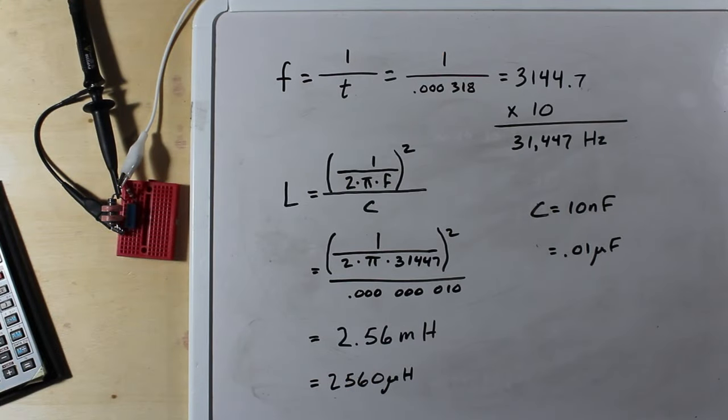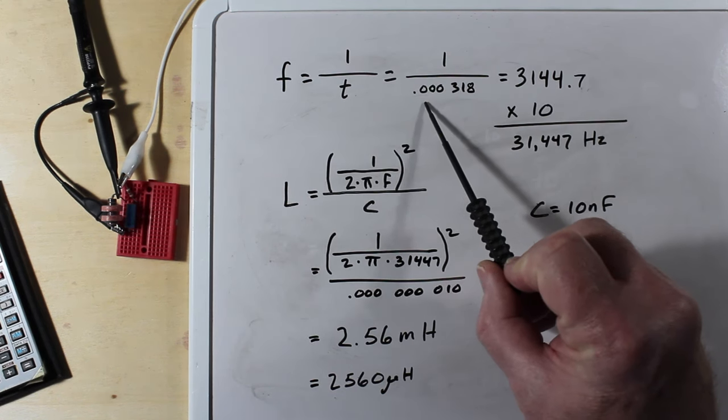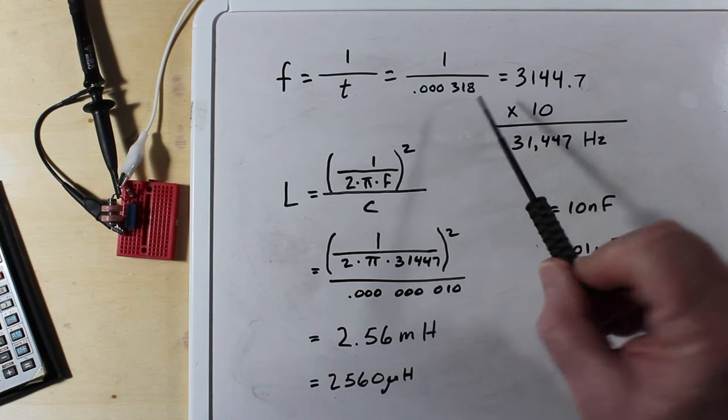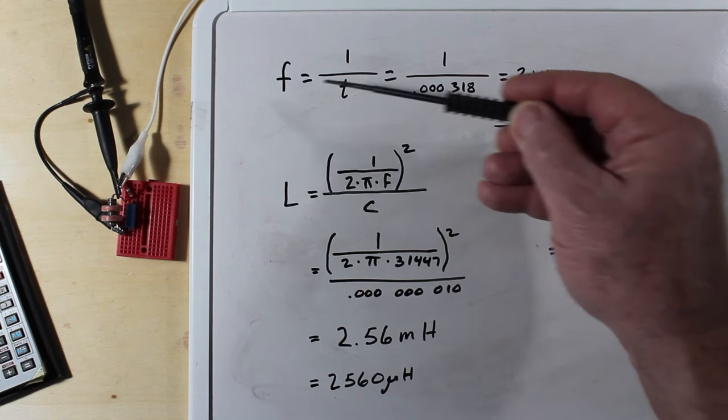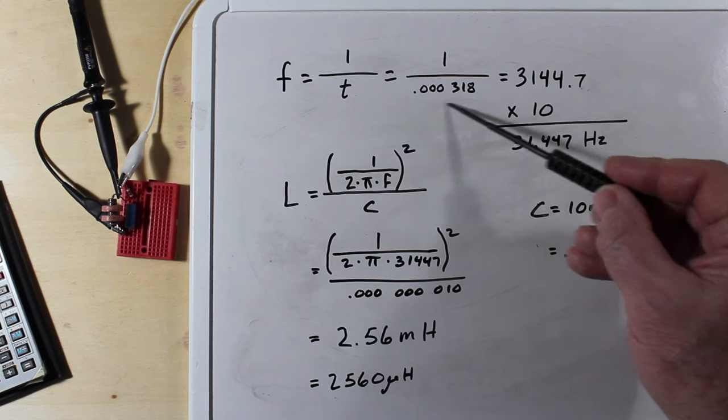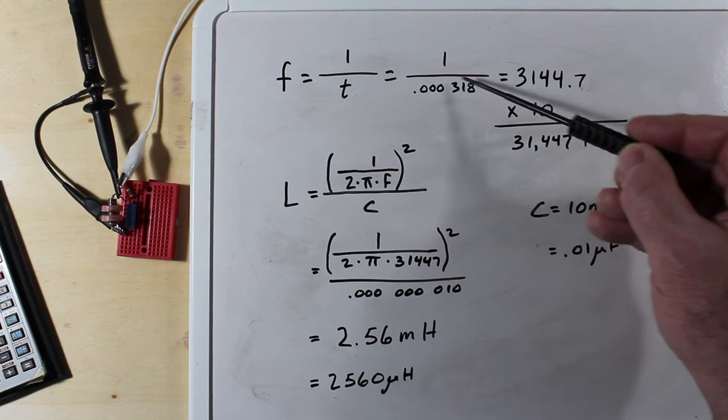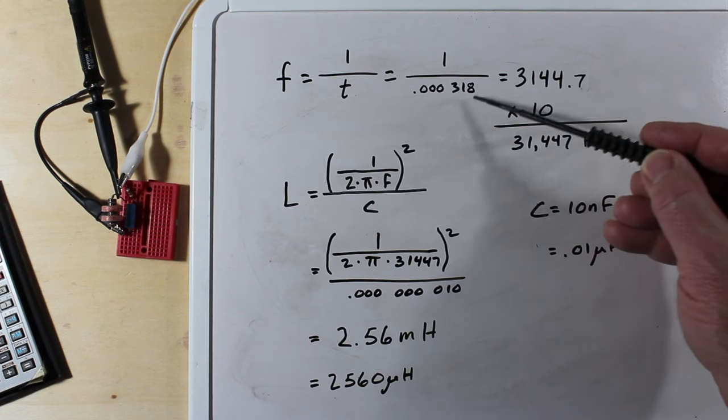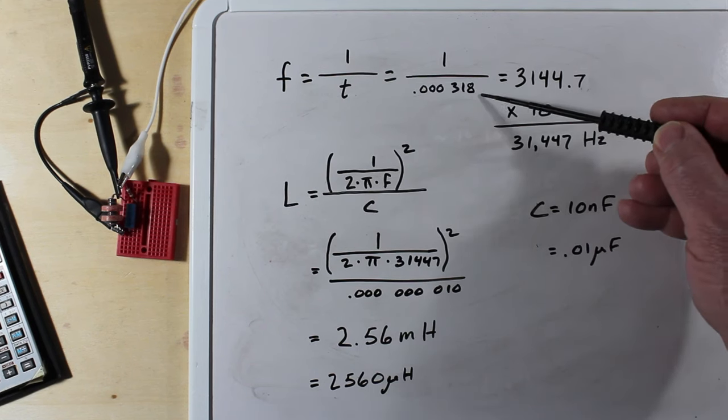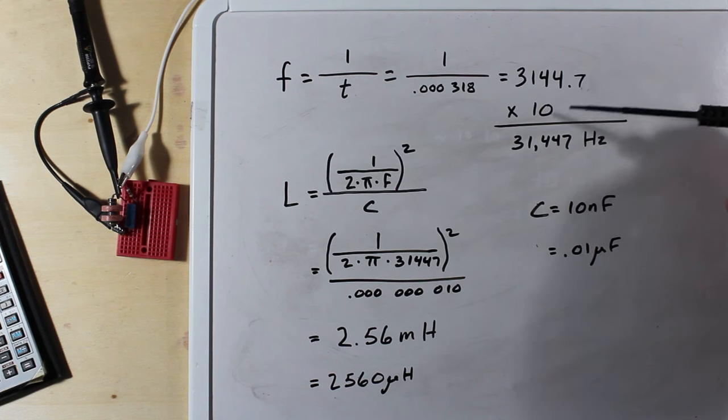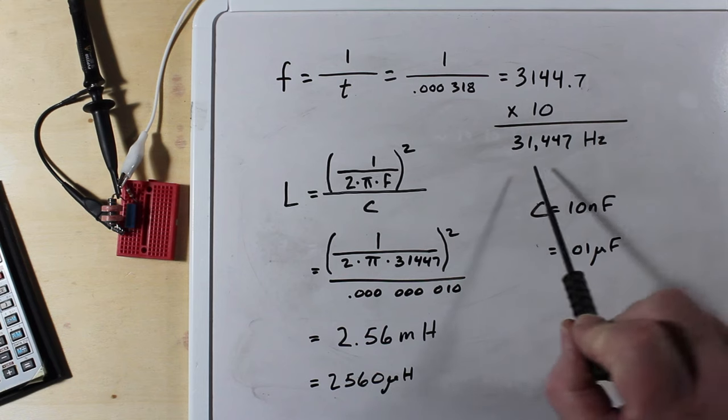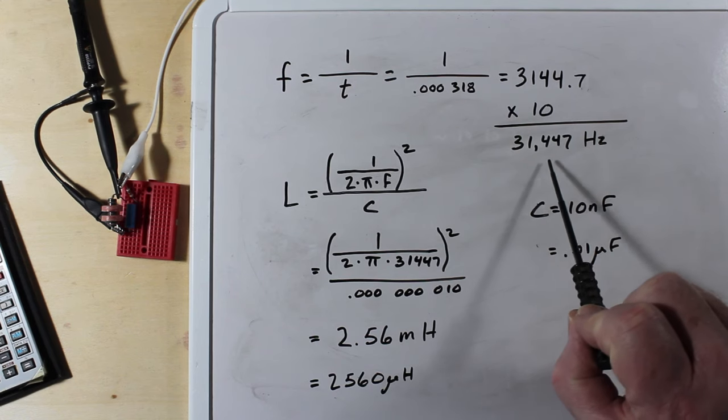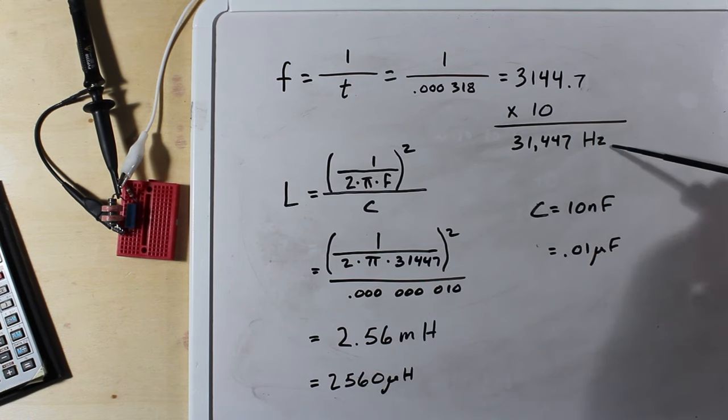So from our oscilloscope we had the measurement of 318 microseconds and we can see that right here. So this is it basically drawn out. Frequency is 1 over time. This is hypothetically 1 cycle, but recall that we took it across 10. So 1 over this amount comes out to this. We took it over 10 cycles so we have to multiply it by 10 to get the true value of our frequency which comes out to 31,447 hertz.